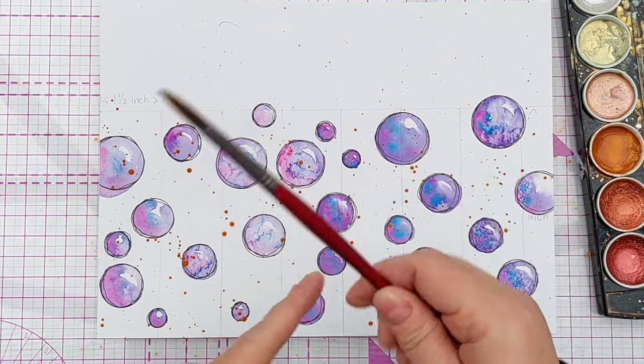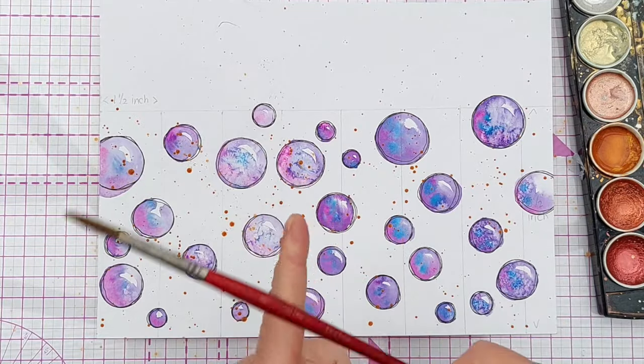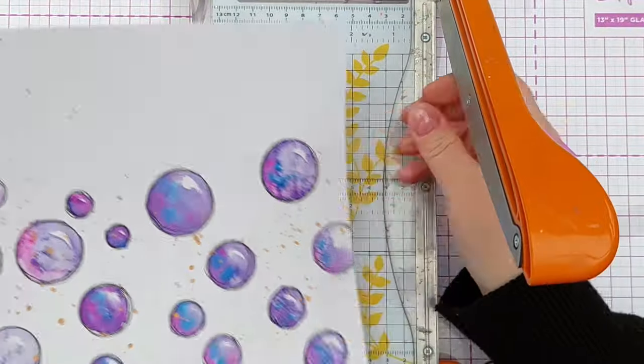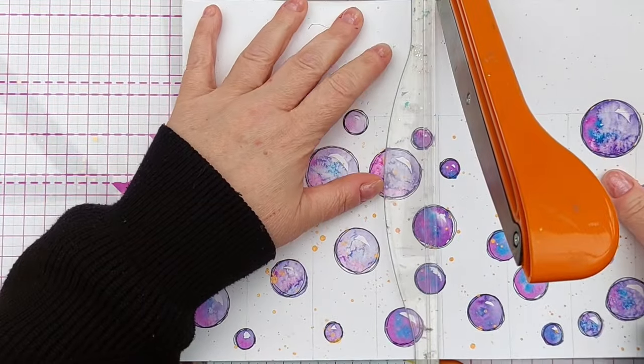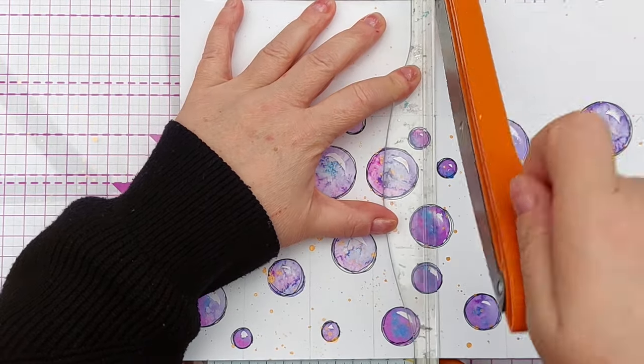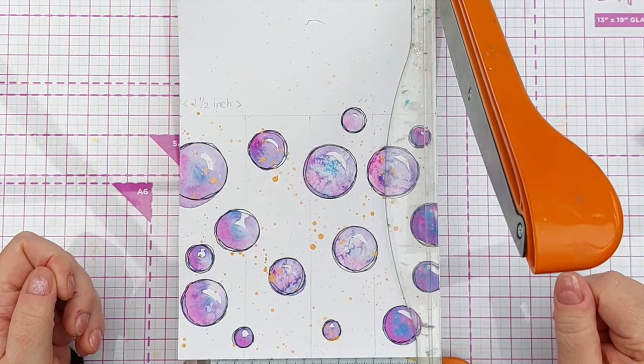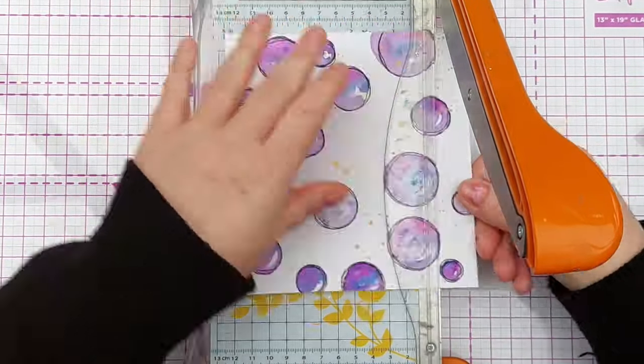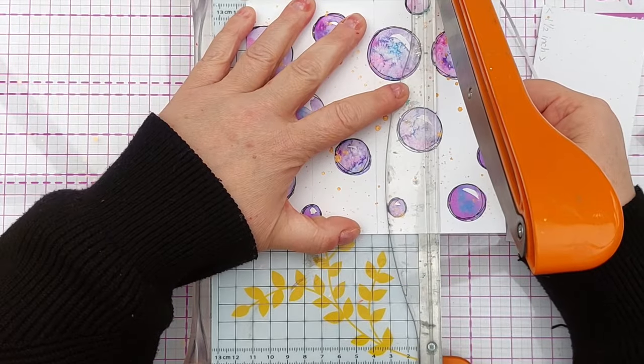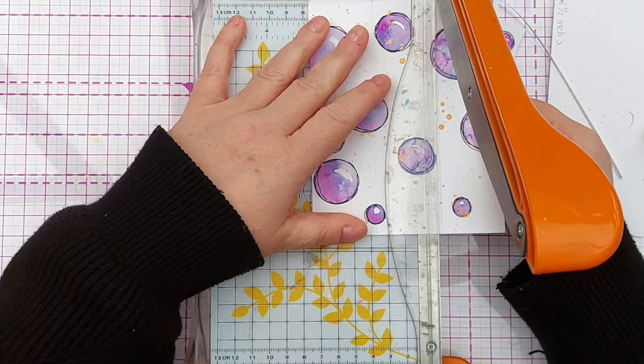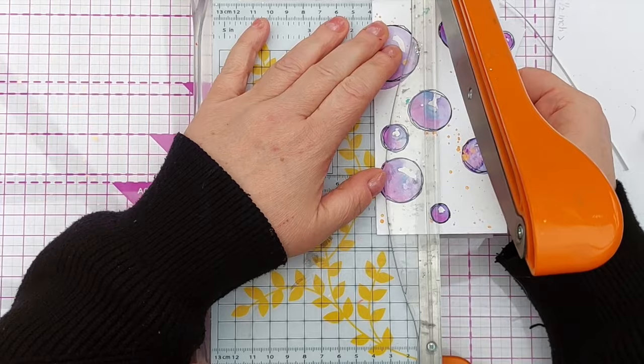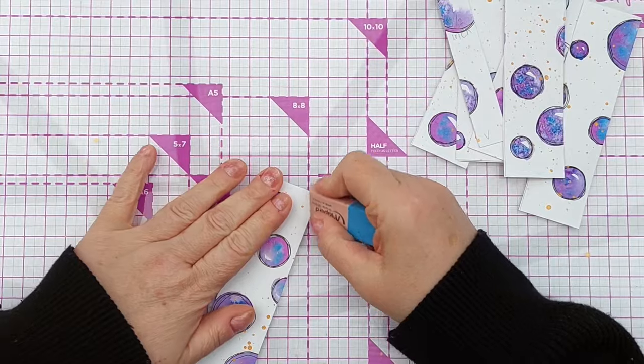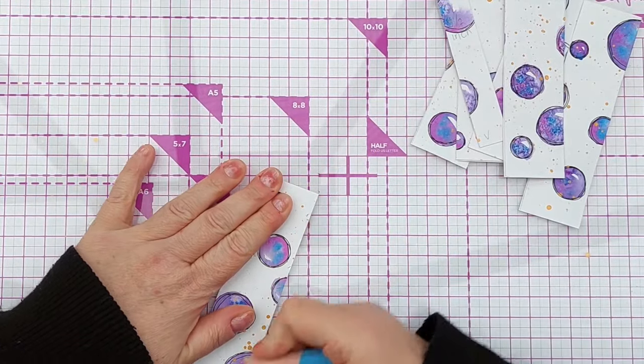To get some finer flicks. To chop it up, I'm going to use my guillotine because it gives me nice straight lines. And I'm going to erase any pencil lines that remain on my panels.